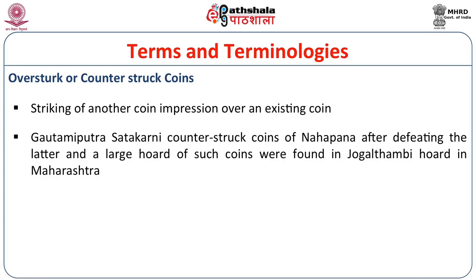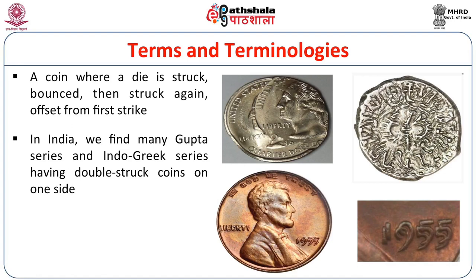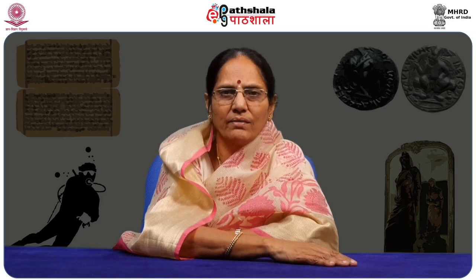When a die is struck, bounced, and then struck again offset from the first strike, that is called an overstruck coin. In India, many Gupta series and Indo-Greek series have double-struck coins on one side. You can see the figures on the right side of the slide where the overstruck coins are. It is also the overstruck coin of Indo-Greek Menander — a silver double-struck drachma. You can see the diadem and bust of the king which is overstruck.